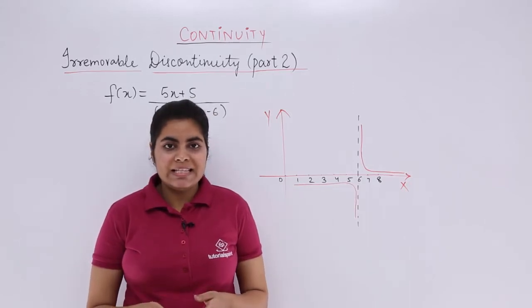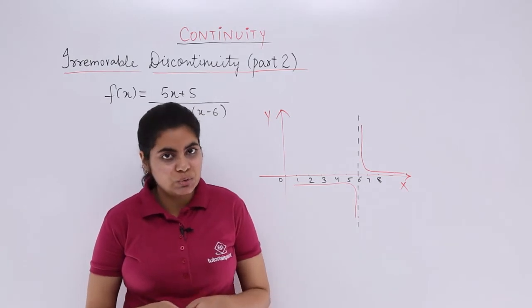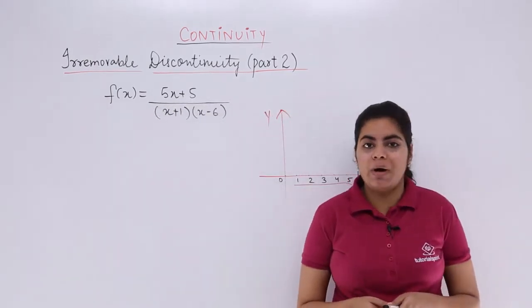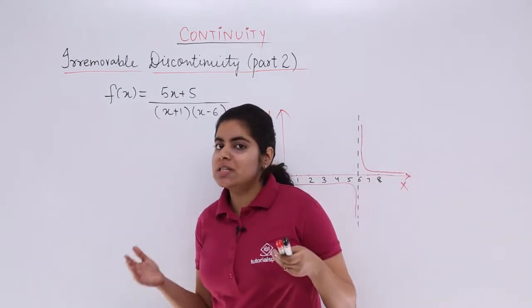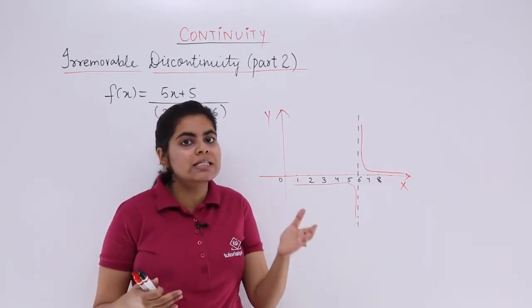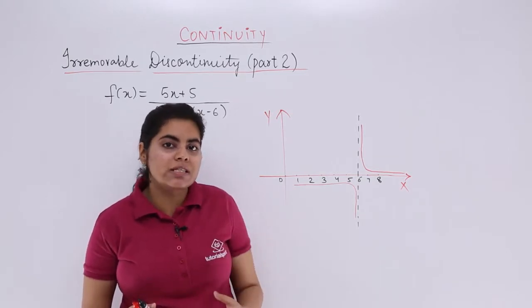In this video, let's see irremovable discontinuity part 2. In the previous video, we saw irremovable discontinuity part 1. That means in such cases wherein the function is discontinuous and you cannot do anything about it, what are the various scenarios where we get irremovable discontinuity?